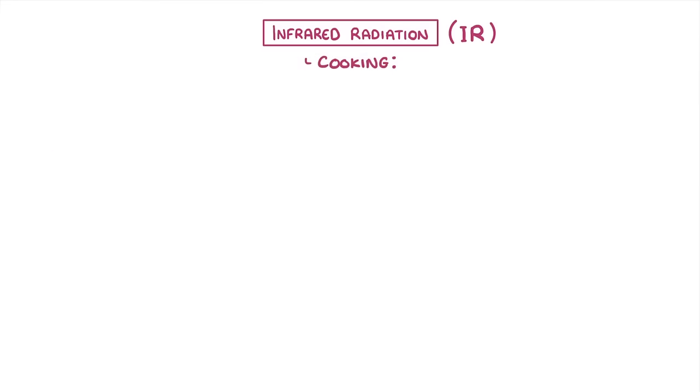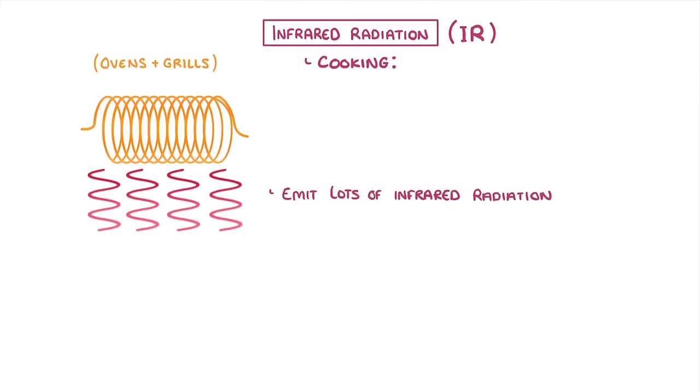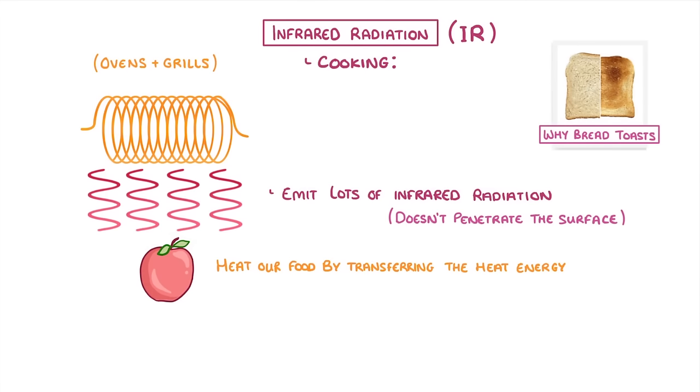Another use is in cooking. By heating metal to very high temperatures, like in ovens and grills, we can make the metal emit lots of infrared radiation, which can then heat our food by transferring the heat energy, causing it to cook. Unlike in microwaves though, infrared radiation doesn't penetrate the surface of the food, which is why bread toasts in a toaster rather than just getting generally warmer like it would in a microwave.